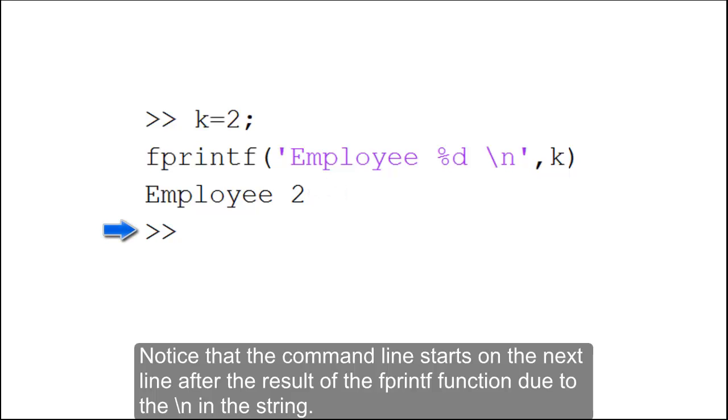Notice that the command line starts on the next line after the result of the fprintf function, due to the backslash n in the string.